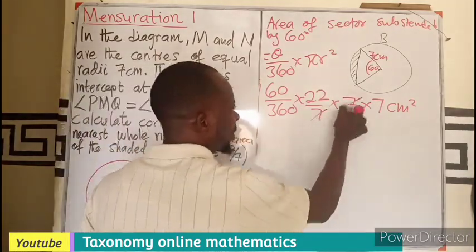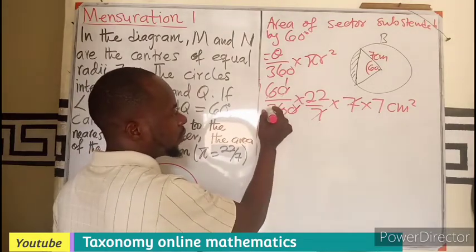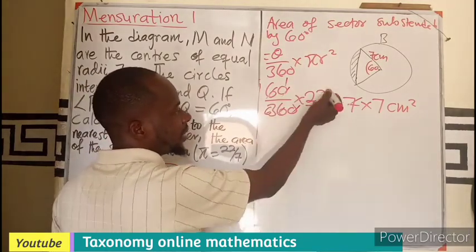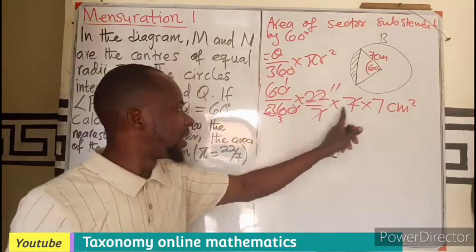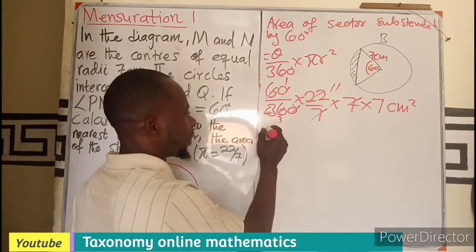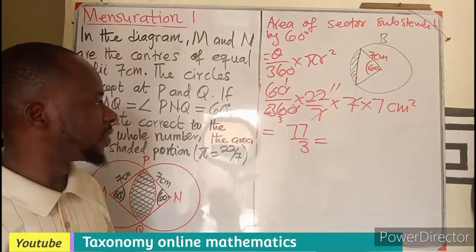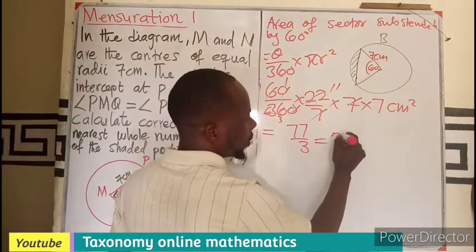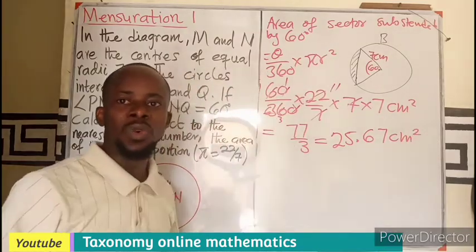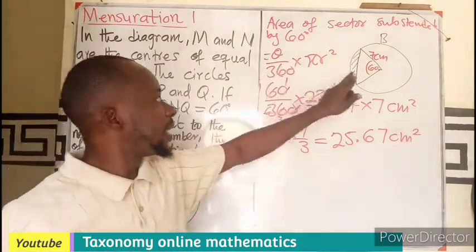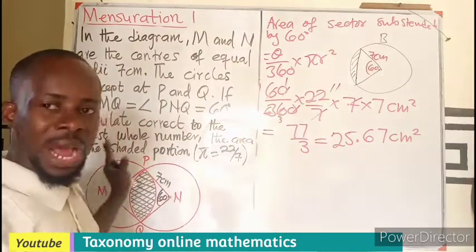This will give us centimeter squared. Per our calculation, this will cancel this, this will go here. We have 1/6 and 11/3. So it's going to be 77 divided by 3, and that will give us 25.67 cm² for the area of the sector.